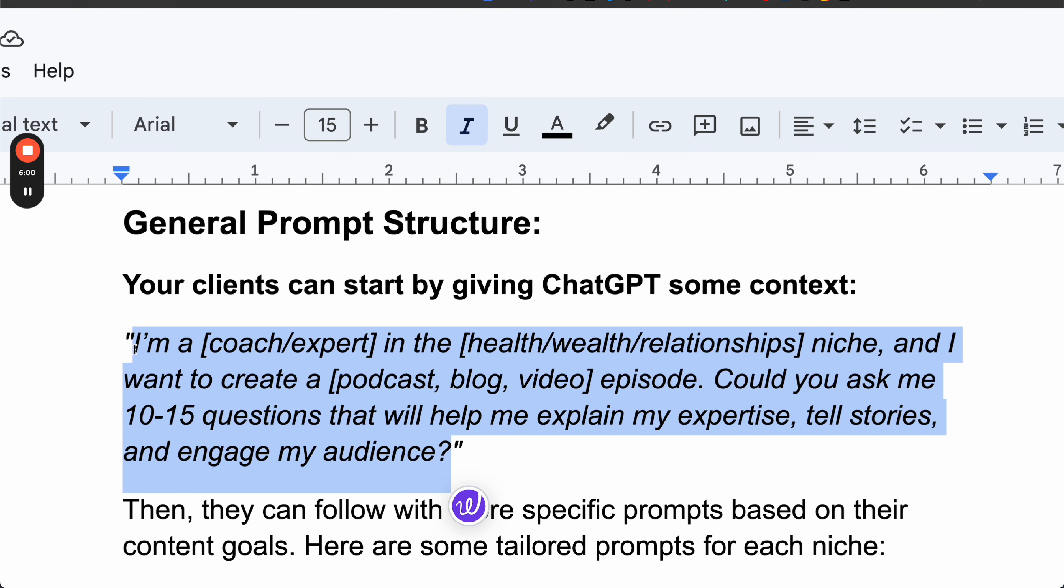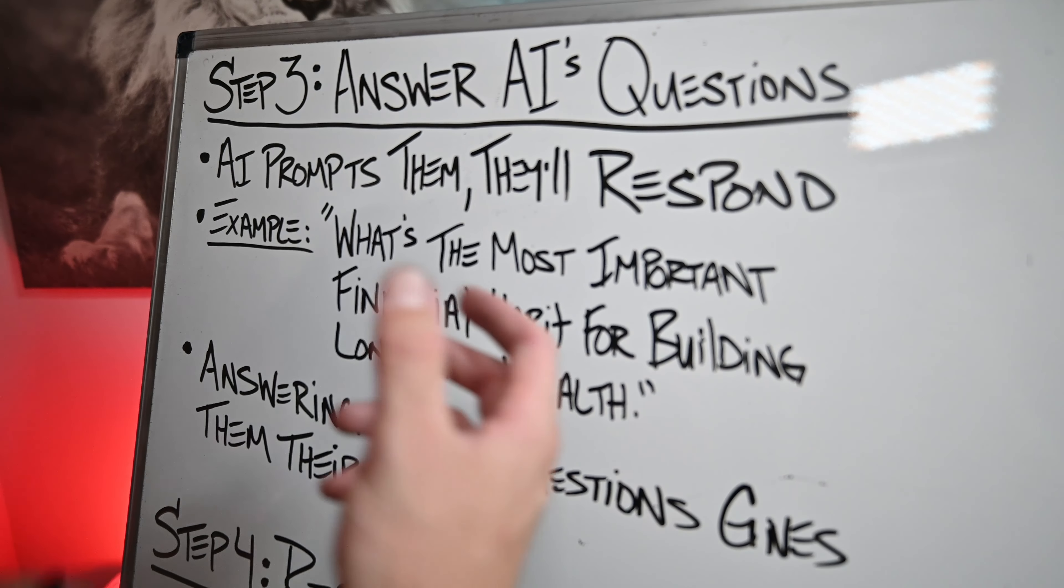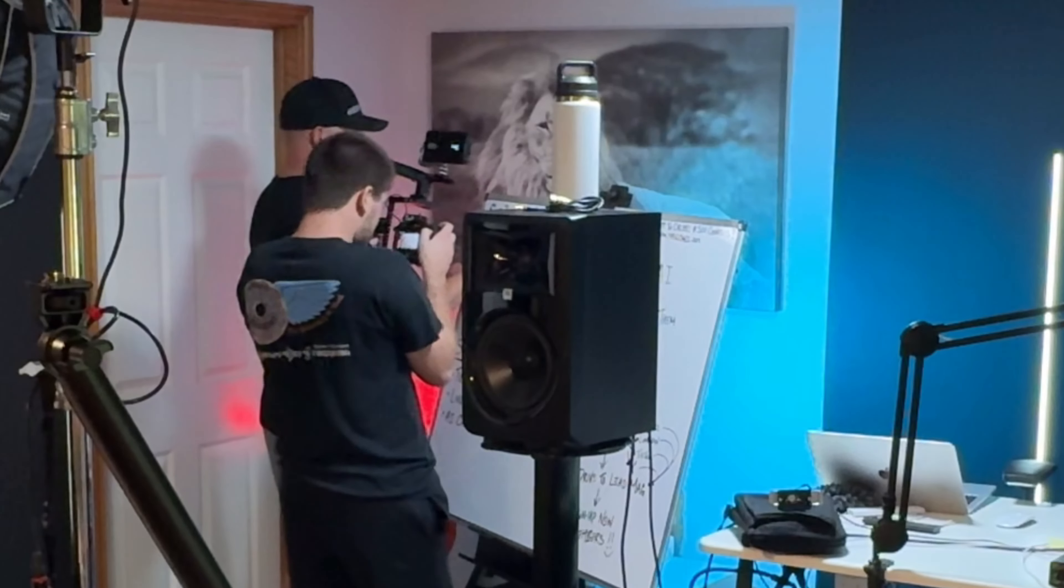Step three is basically, once you put the prompts in, AI will prompt them and then they'll respond. They'd be like, what's the most important financial habit for building long-term wealth? That's what it would ask you, and then you would respond to it. You'd answer the questions and that's what gives you your content by answering those questions. Then you can edit the video like we talked about.